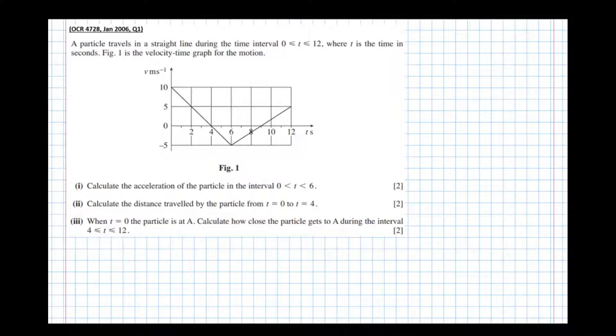Part 1 says calculate the acceleration of the particle in the interval 0 to 6. Acceleration is the rate of change of velocity. And in this context, the rate of change of velocity is the gradient of the graph.